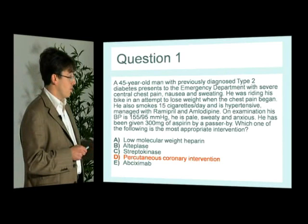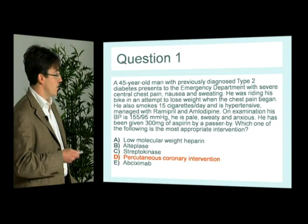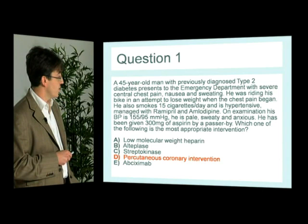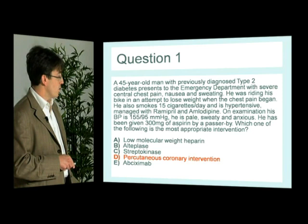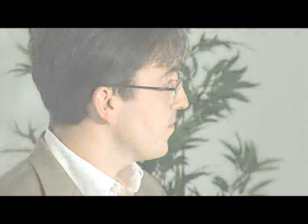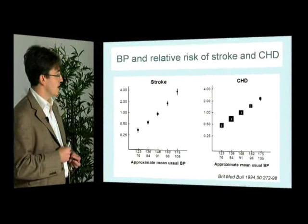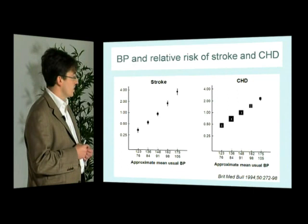This question also tests your knowledge of prioritization, as these are all drugs you may use in the management of an acute event. For instance, in an acute coronary syndrome you may administer low molecular weight heparin, and in the catheter lab you may give a drug such as abciximab — a glycoprotein 2b3a receptor inhibitor. The question also illustrates the importance of risk factors in causing underlying coronary artery disease. Blood pressure is a very important risk factor predisposing to both stroke and congestive cardiac disease.